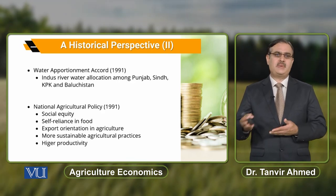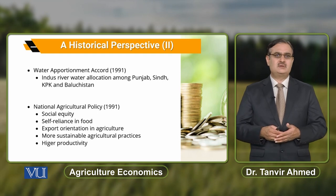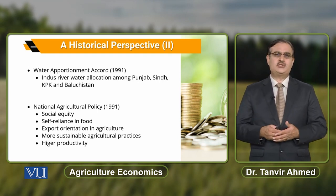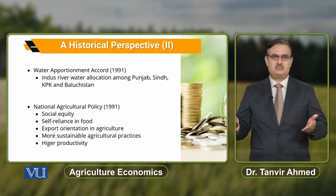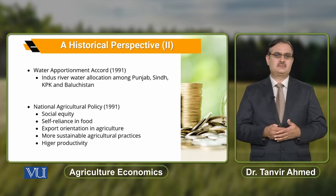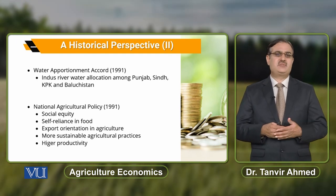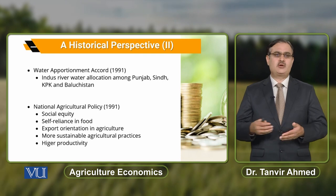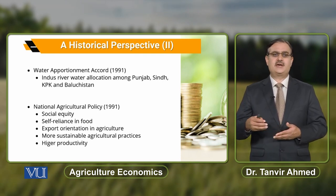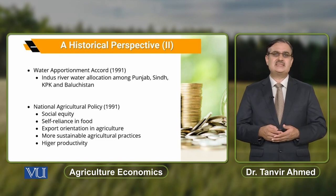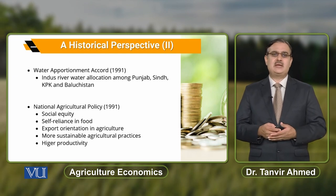The Water Apportionment Accord of 1991 allocated Indus river water among the provinces of Pakistan. Then, the National Agriculture Policy of 1991 had the objective to promote social equity, self-reliance on food, export orientation in the agricultural sector, more sustainable agricultural practices, and higher productivity.